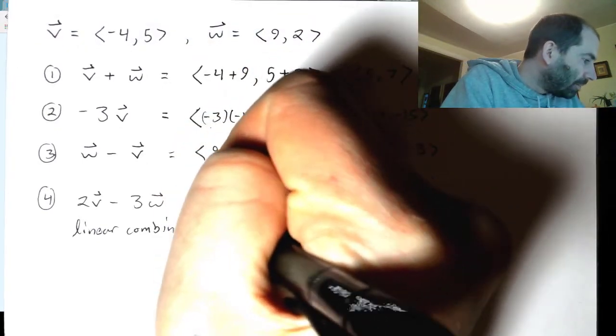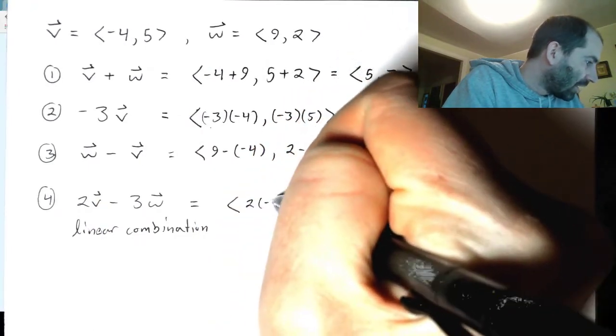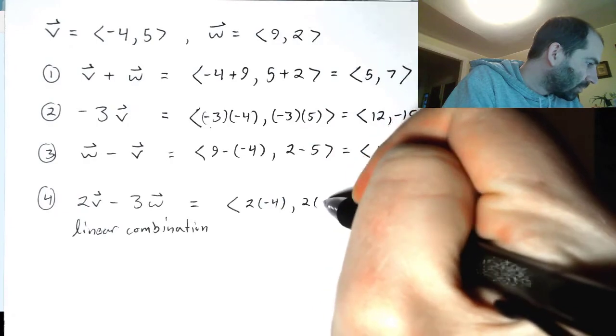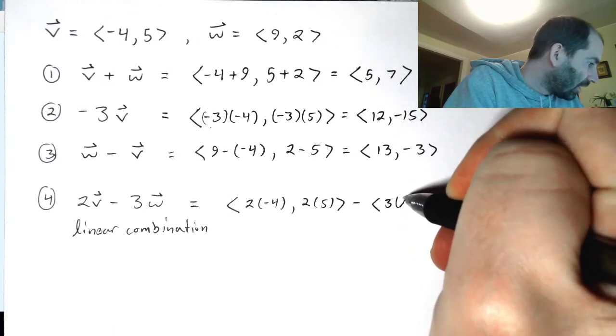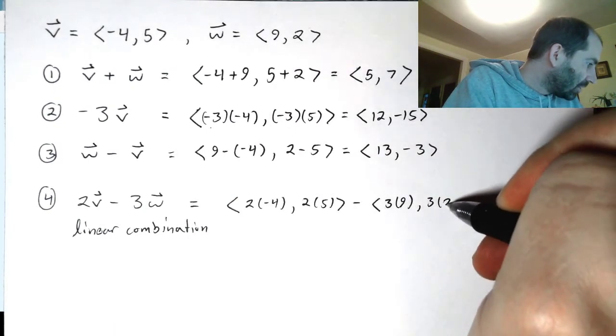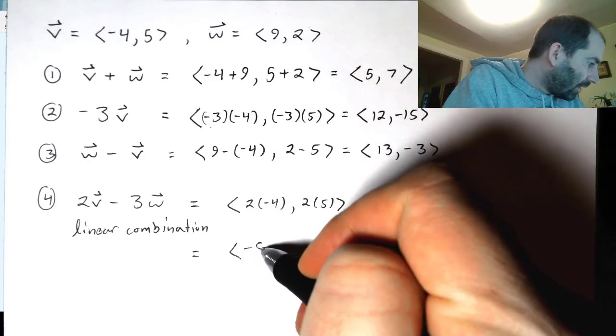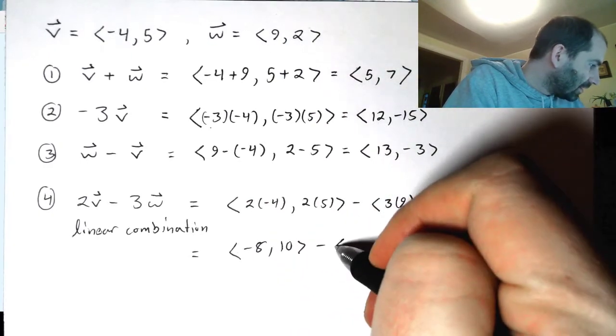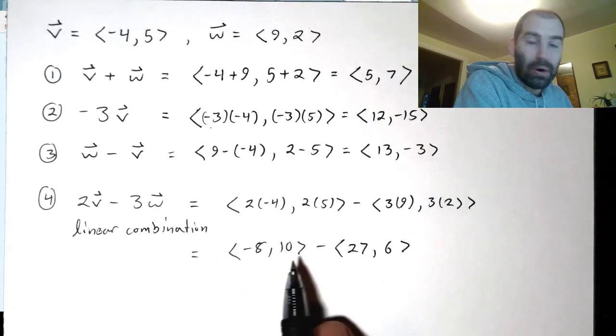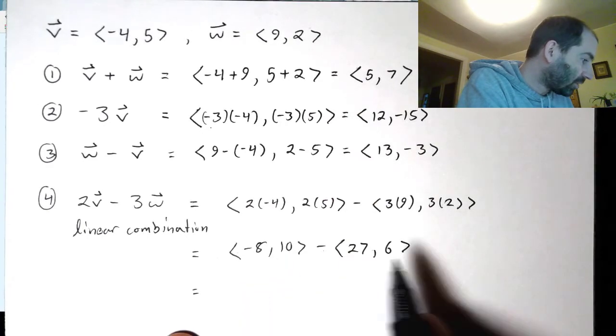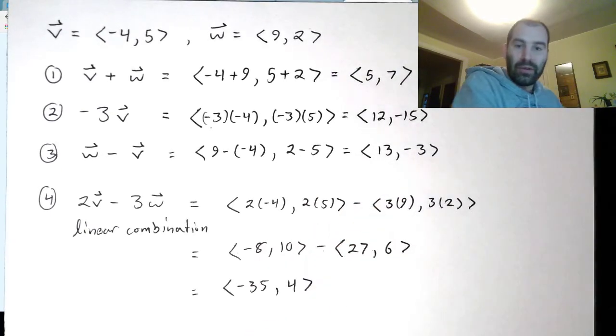Well, let's see what we get here. 2 times v, what's that? I'm going to bring 2 inside. So that's going to be 2 times negative 4, 2 times 5. Then I'm going to subtract 3 times w. So that's going to be 3 times 9, 3 times 2. Now, let's see what we get here. That's going to be negative 8, 10 minus 27, 6. And then we're subtracting. So we just subtract component-wise. It's going to be negative 8 minus 27. So that is negative 35. And then 10 minus 6 is 4. And so there's our answer.